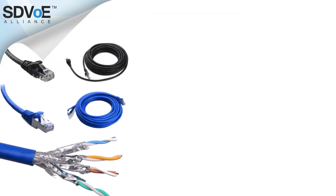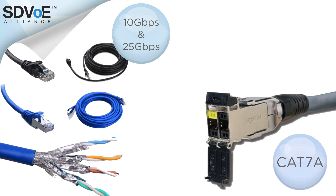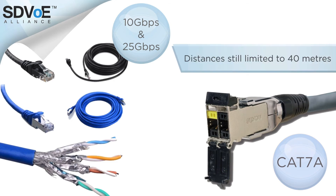While there are copper solutions for 10 gigabit and even experiments at 25 gigabits per second and beyond, the consensus is that these speeds will require CAT 7A or better and the RJ45 will need to be replaced with something more suitable for these high speeds. Even with these changes in place, distances may still be limited to 40 meters or less.